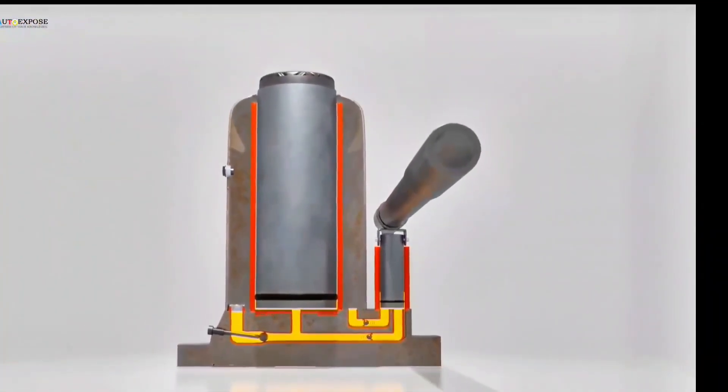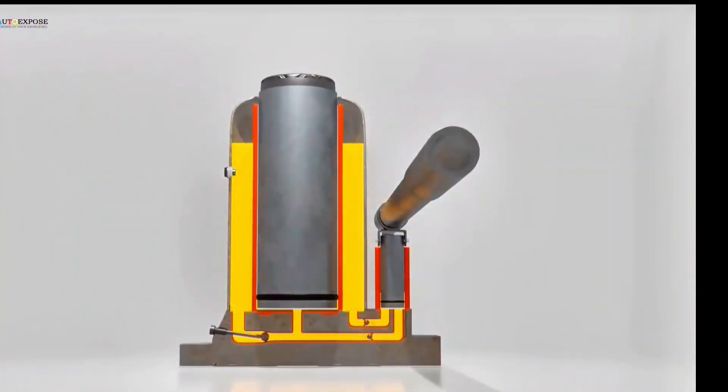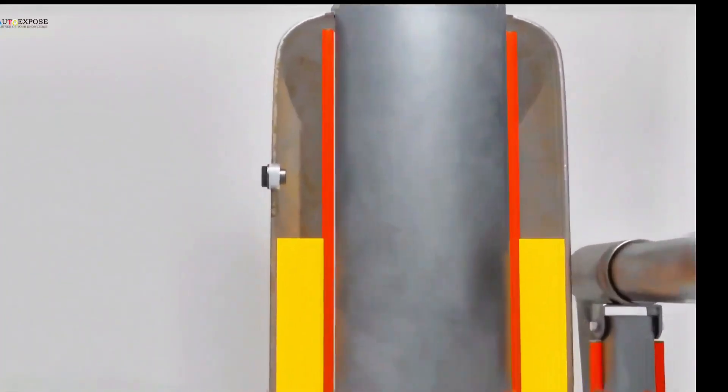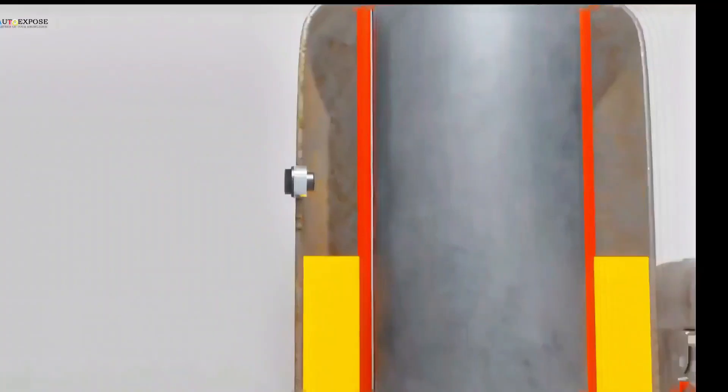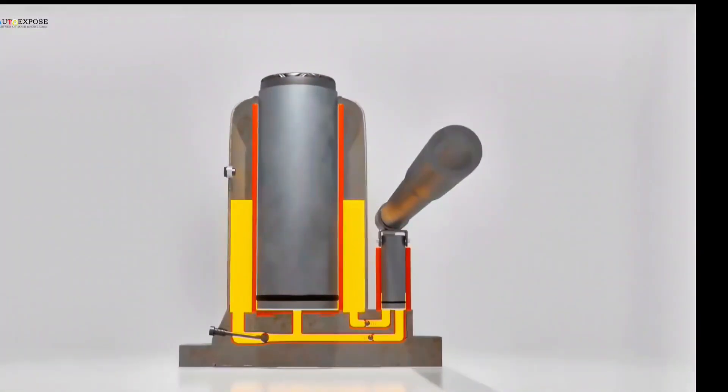On the outside of the jack, there is a reservoir tank. This stores the fluid used in the hydraulic system. The oil is filled through a filling hole, usually located on the side of the jack.